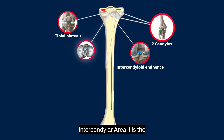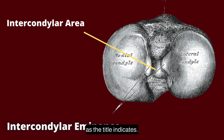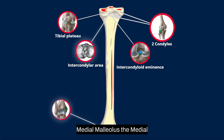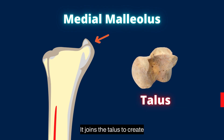Intercondylar area: it is the area between the two condyles. The medial malleolus is a bony protrusion on the distal end's medial surface. It joins the talus to create part of the ankle joint.